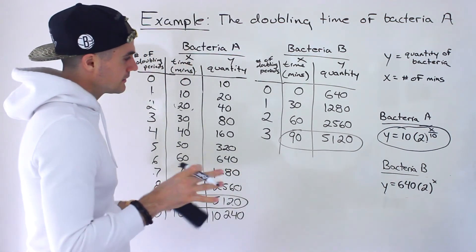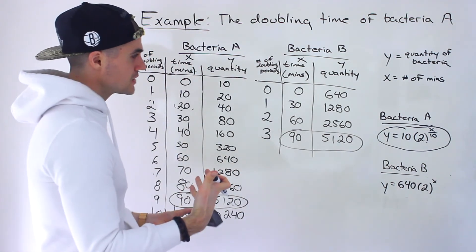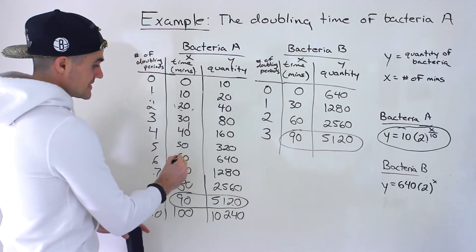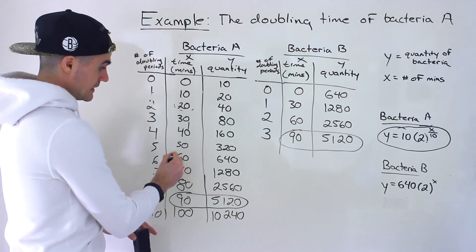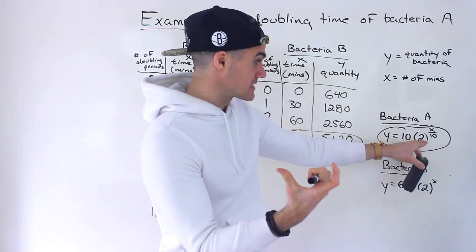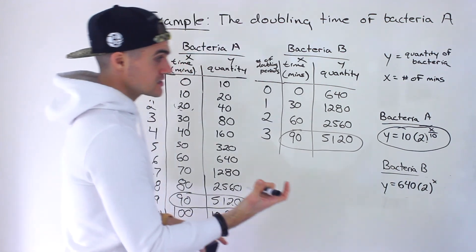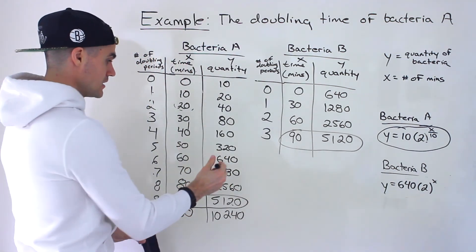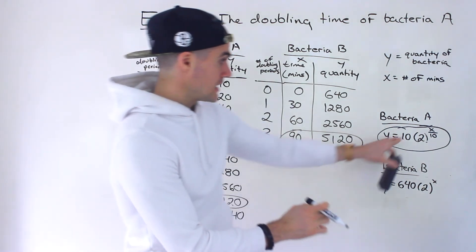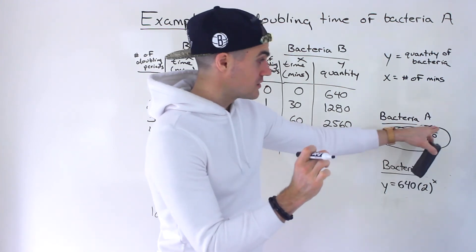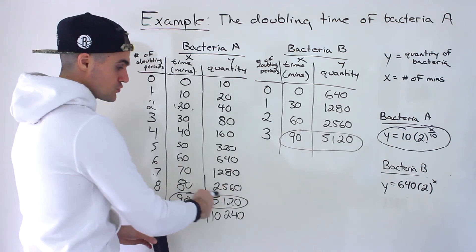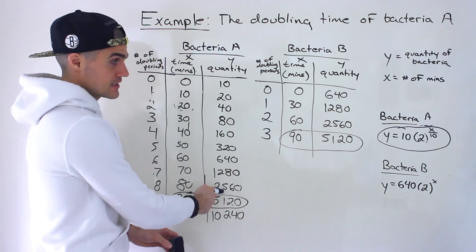You may need to rewatch that explanation, but you can test it. Plugging in x = 60: 60 ÷ 10 = 6, and 2^6 = 64, times 10 gives 640 — correct. Plugging in x = 80: 80 ÷ 10 = 8, and 2^8 = 256, times 10 gives 2,560. Only the exponent changes when we let X equal the number of minutes.